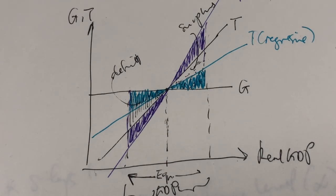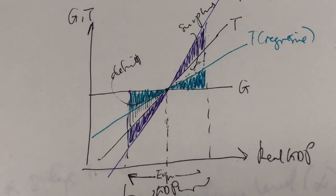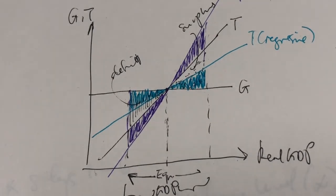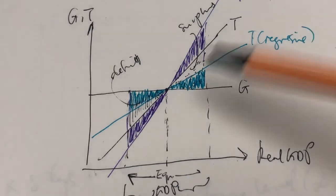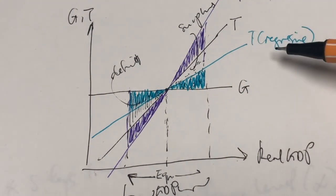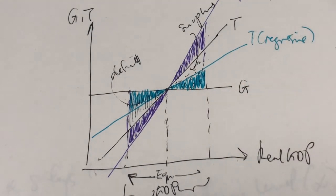Just to recap: the size of the automatic stabilizer — whether it's a progressive tax system, proportional tax system, or regressive tax system — depends on the slope of the tax line.